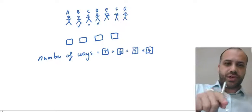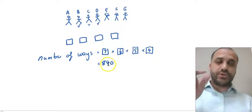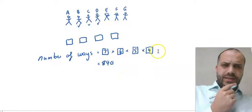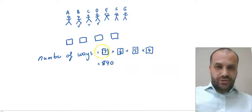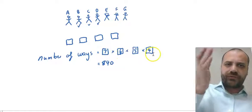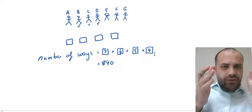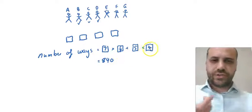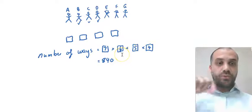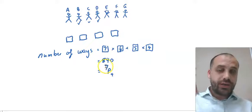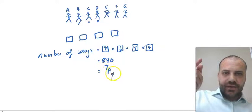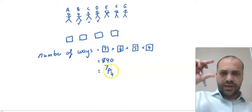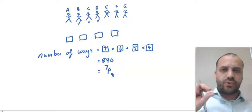Seven times six times five times four equals 840. Now, this is a neat little pattern — it's kind of like a factorial because it's seven times six times five times four, but then it gets cut off at the end. This kind of cut-off factorial is so useful that we have a way of denoting it. We write it as 7P4 — a big seven, a normal-sized P, and a subscript four.